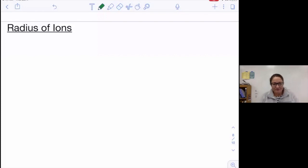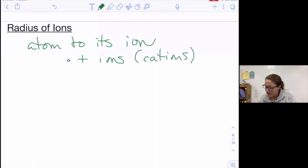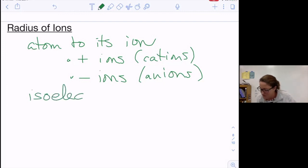Up next is ionic radius. There's a couple ways that we can approach radius of ions problems. We can compare an atom to its ion, and we can look both at positive ions (remember, positive ions are also called cations) and negative ions, which are also called anions. We can also compare ions to each other, and typically this is done through something called isoelectronic species, which I'll get back to in a minute.